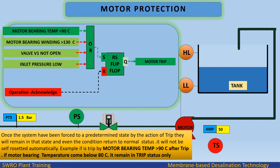Motor protection example: if motor bearing temperature exceeds 90 degrees, it sets the RS flip-flop and the motor trip output is activated. Once the system has been forced to a predetermined state by the action of a trip, it will remain in that state even if the condition returns to normal status — it will not self-reset automatically.